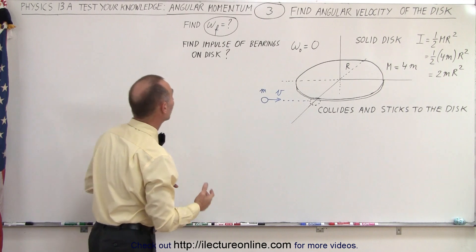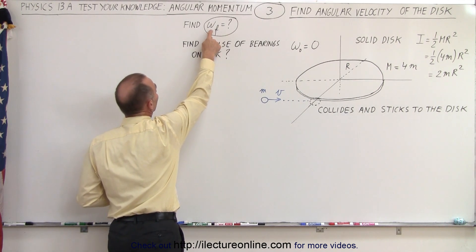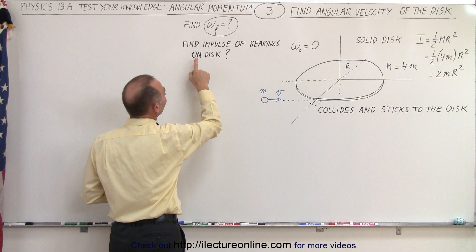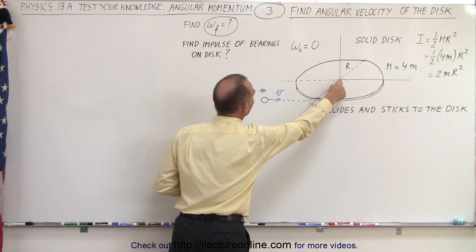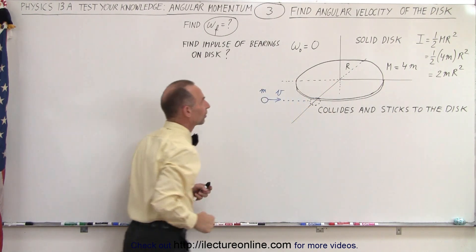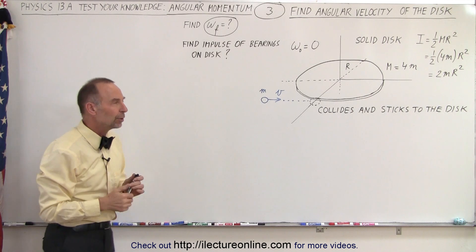The question then is what is the final angular velocity of the disk and the ball, and find the impulse of the bearings on the disk. How do we do that?